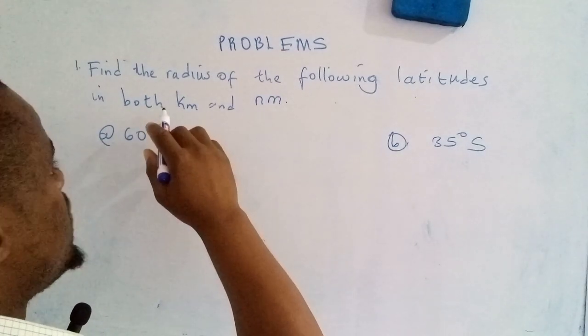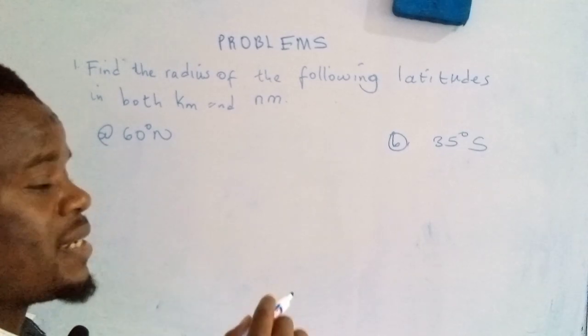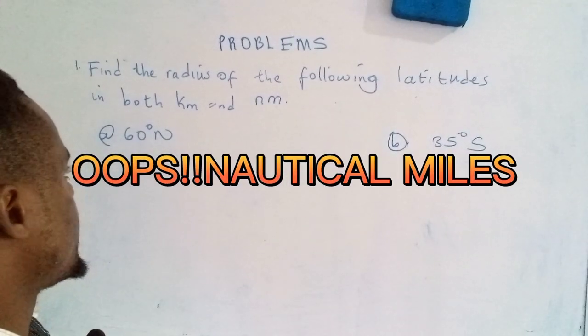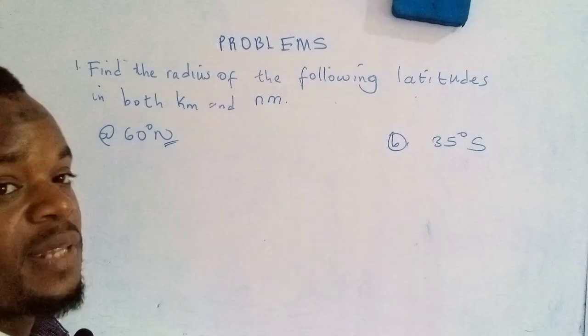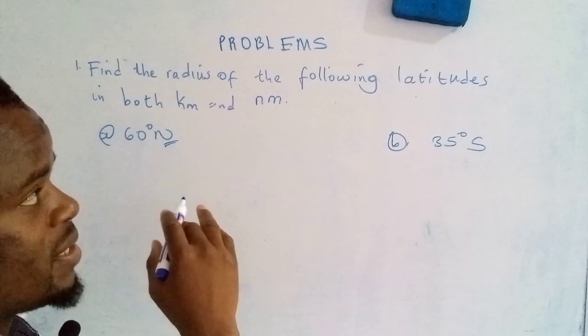So the problem reads: find the radius of the following latitudes in both kilometers and nanometers. Now, this one actually denotes the latitude that we are looking at, which is 60 degrees north.